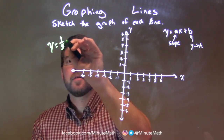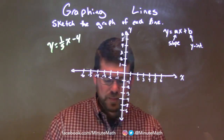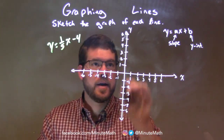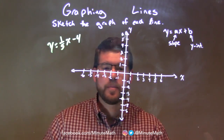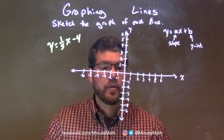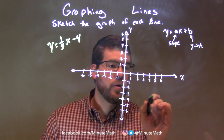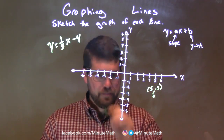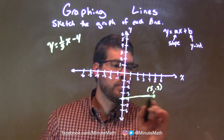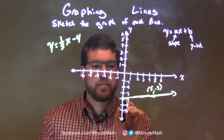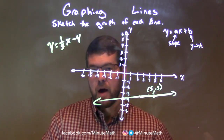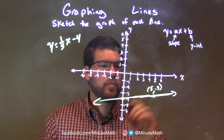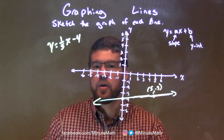y equals 1 fifth x minus 4. We'll first look at our y-intercept — our b-value — negative 4. So I've got a dot on the y-axis right at negative 4. Then the slope is positive 1 fifth, meaning we go up 1 unit over 5: 1, 2, 3, 4, 5. So we have a point right here at 5 comma negative 3. We have two points — let's make a line between them. Two points make a line. Sometimes you want three points, but two is fine. Right there we have our equation of our line graphed.